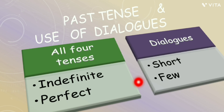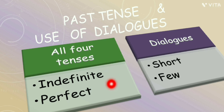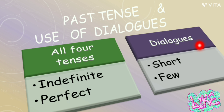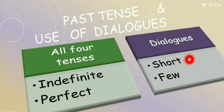The story should be written in past tense. All four forms of past tense should be utilized, with special focus on past indefinite tense and past perfect tense. The story should also include some dialogues, but they should be very short and few — it shouldn't look like a dialogue writing exercise.